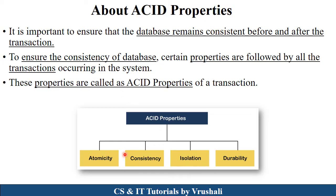There are a total of four ACID properties. A stands for Atomicity, C stands for Consistency, I stands for Isolation, and D stands for Durability. If you follow all these ACID properties, the database always remains in a consistent state and there are no errors or failures. That's why there are ACID properties.